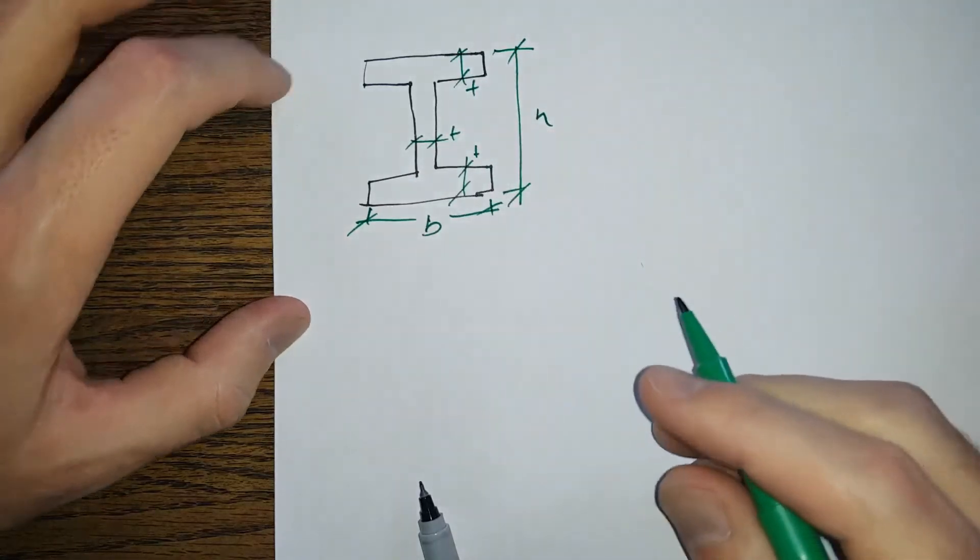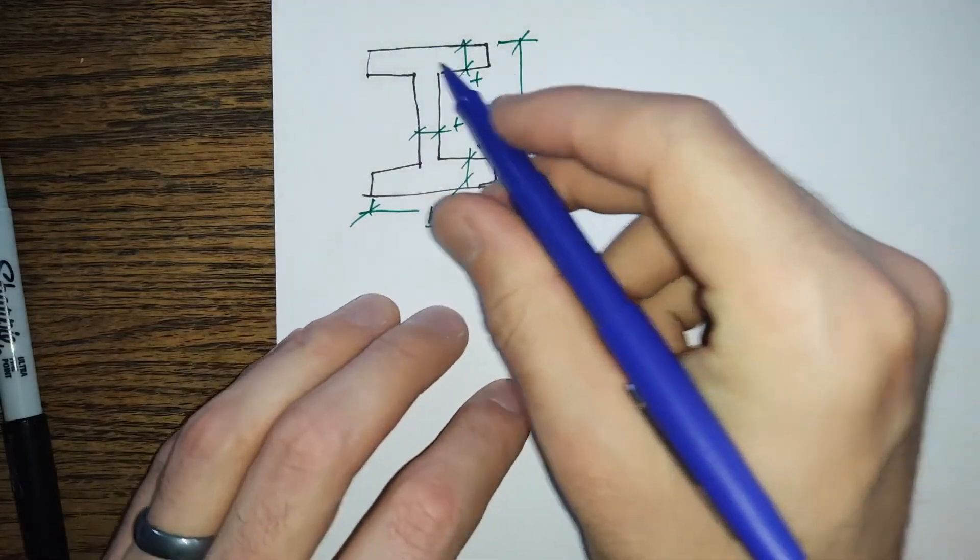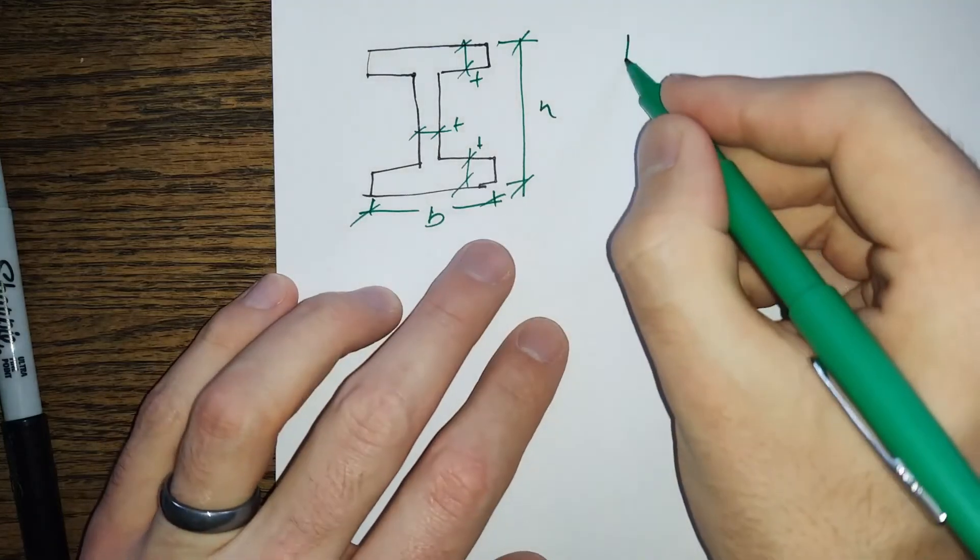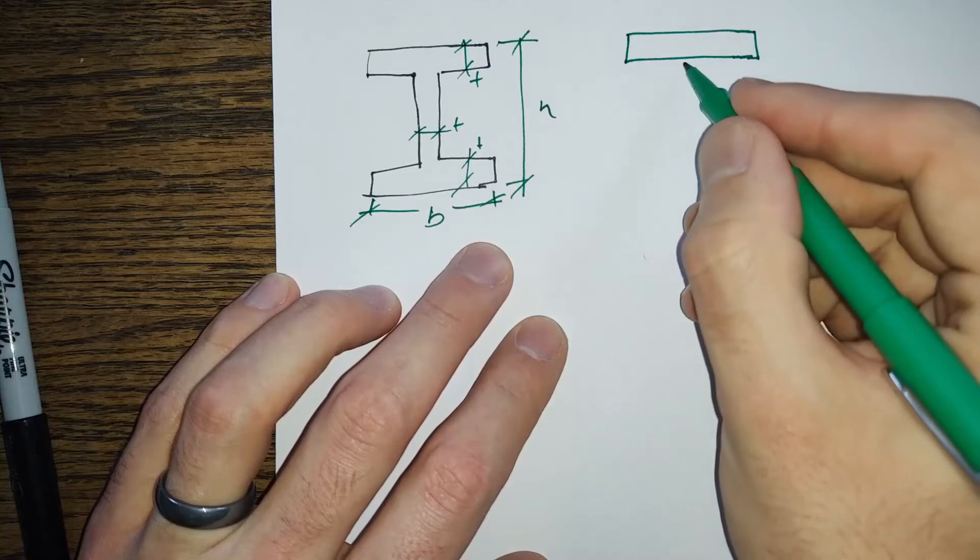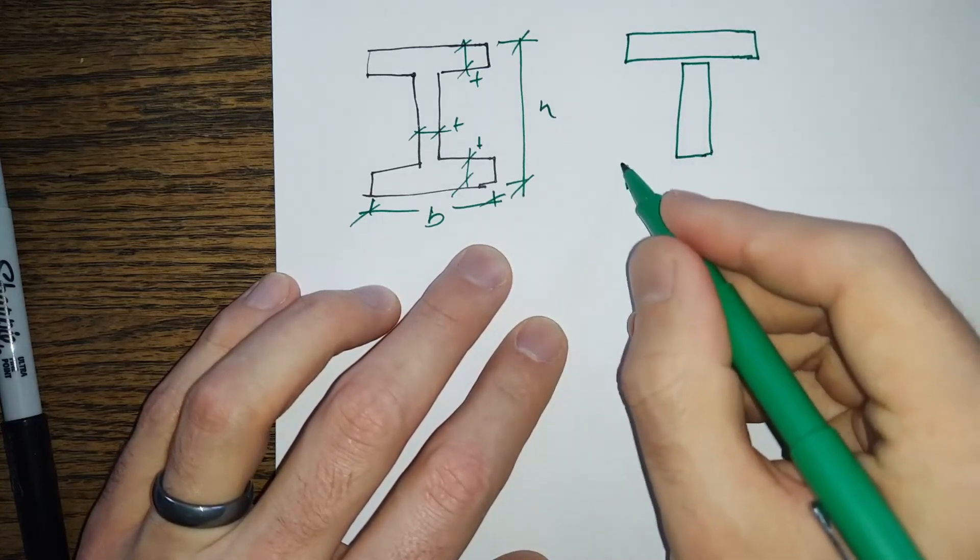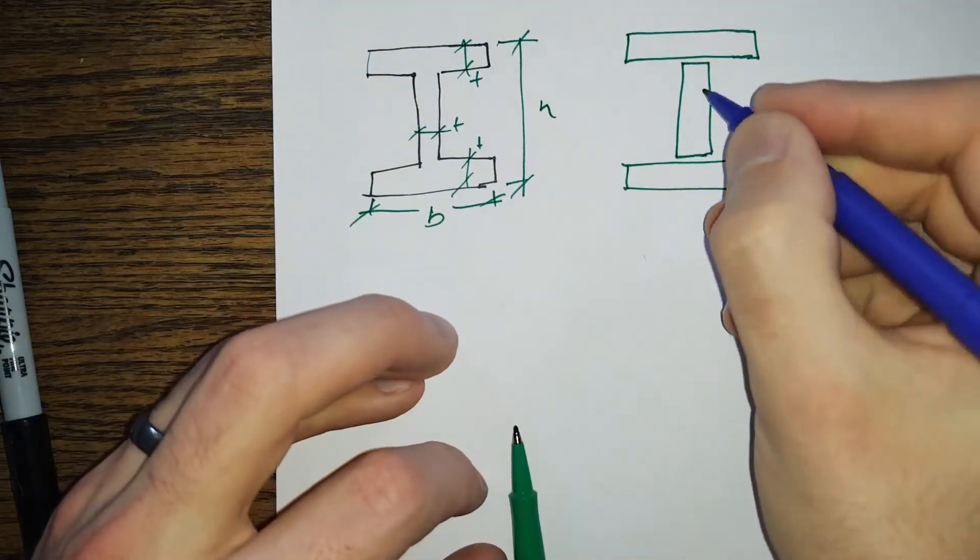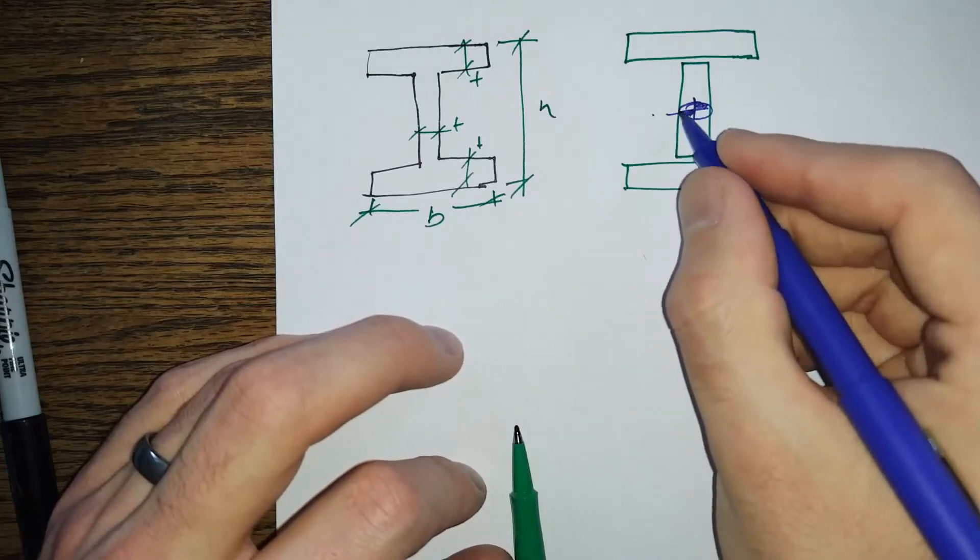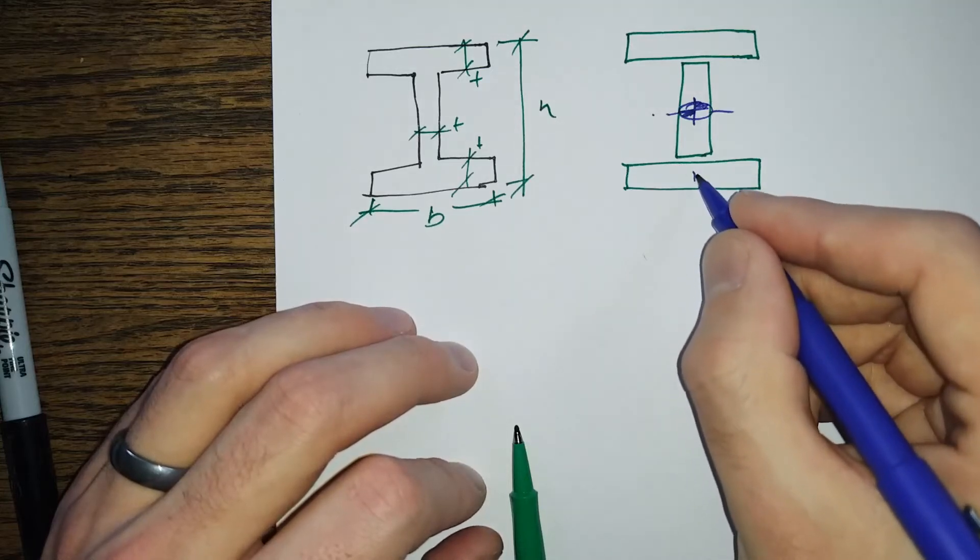And for the sake of making this all easy, we're going to say that these are all thickness t. So we've got options. We can either break this up and make the addition of this chunk, this chunk, and this chunk.